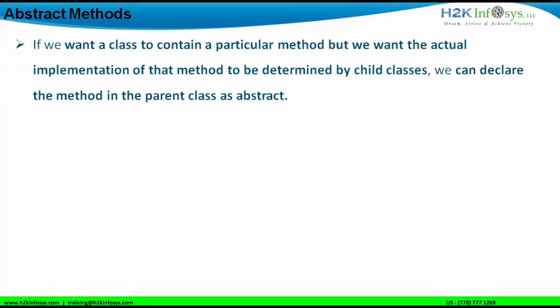First of all, if you want a class to contain a particular method but you want the actual implementation of that method to be determined by a child class, we declare the method in the parent class as abstract. When we declare an abstract method in a parent class, it means we want to implement that abstract method in the child class which is inheriting the parent class.